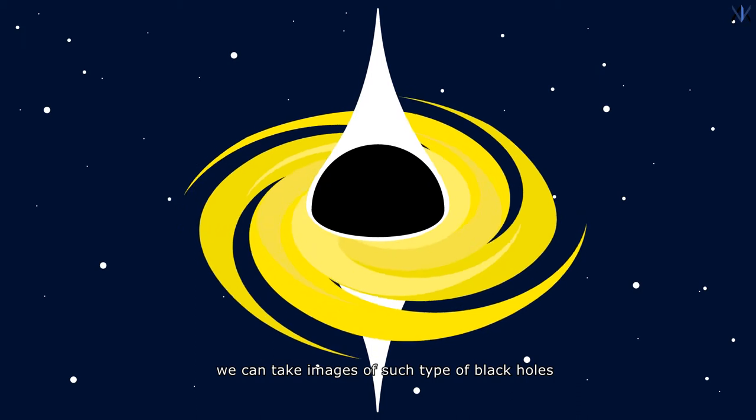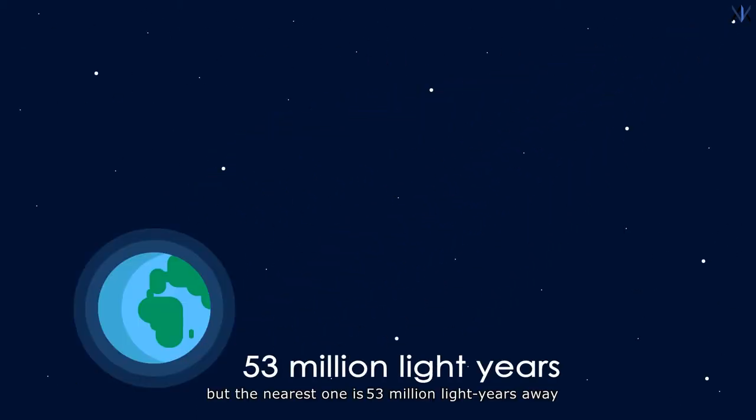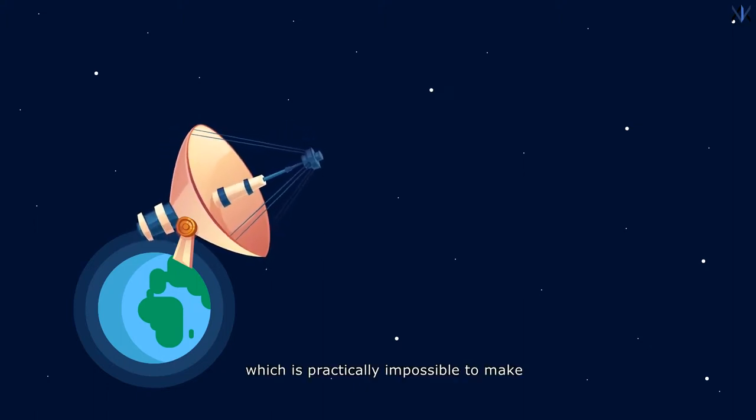We can take images of such types of black holes, but the nearest one is 53 million light years away. In order to take images of such distant objects, we would require a telescope as big as our Earth, which is practically impossible to make.